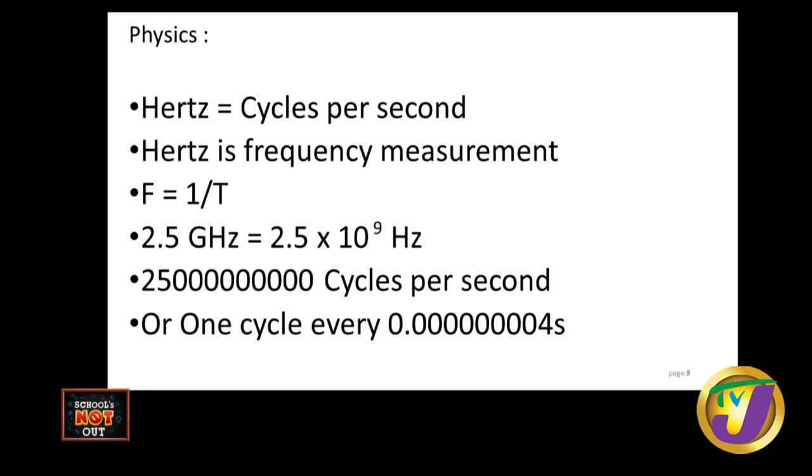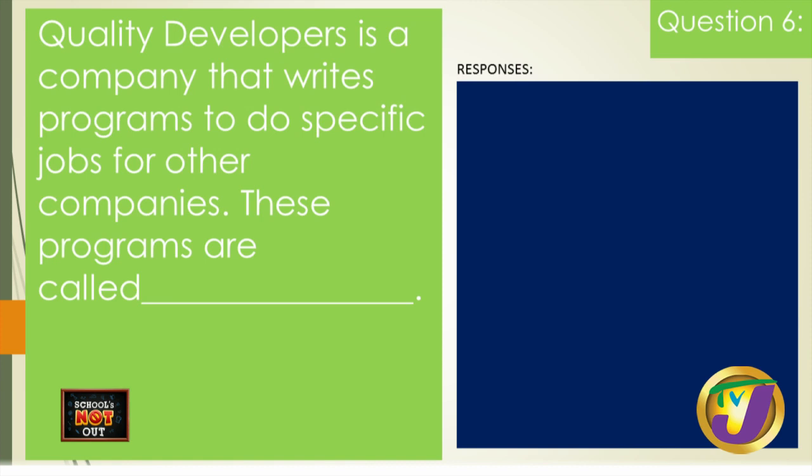Each time an instruction is being executed, your computer might be working on several different things simultaneously because of the speed involved. So when you see gigahertz, that is what it means. In the exam, if you see anything about CPU speed, it will most often be related to gigahertz.